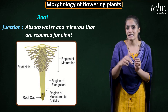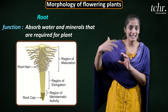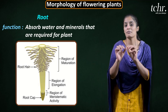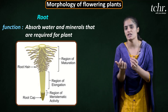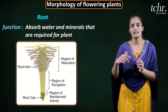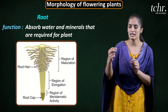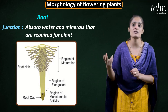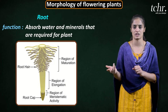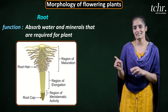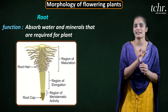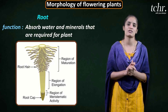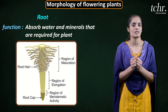The next region is the region of maturation. The cells divide and elongate, they become mature and become specific in their function. This region has root hairs, which are actually responsible for the absorption in the root.